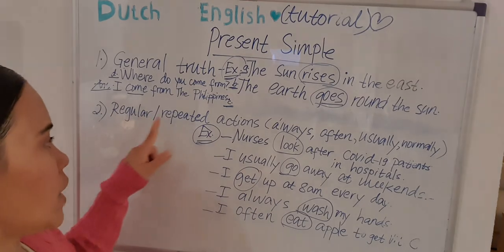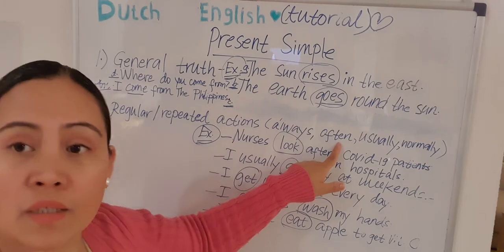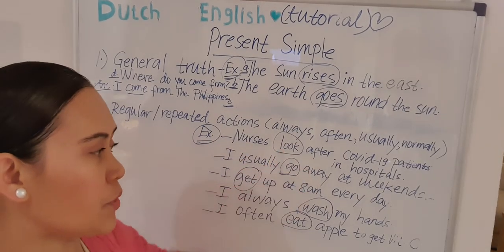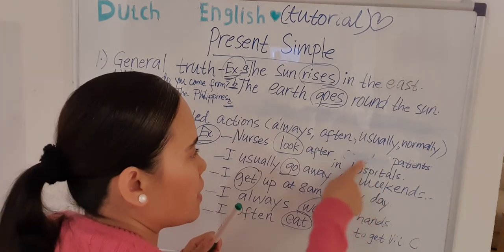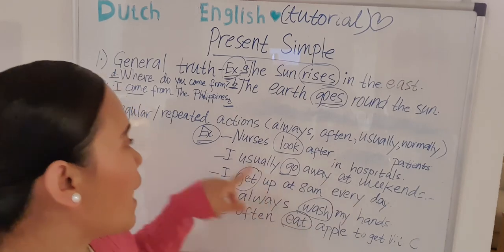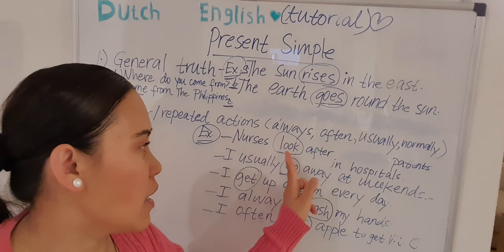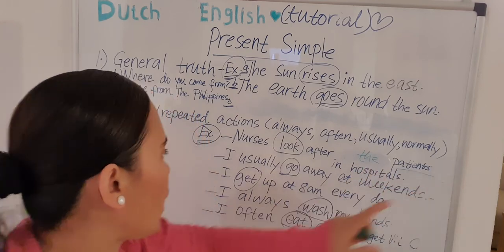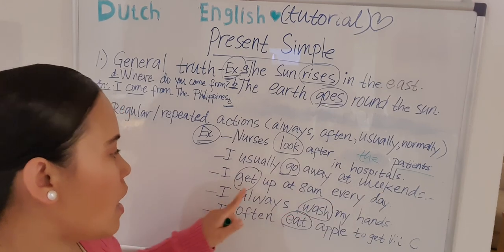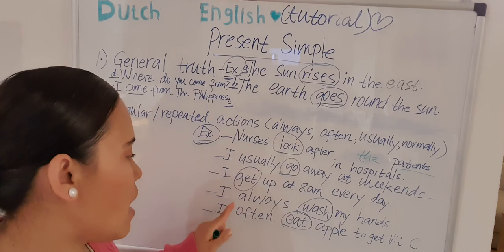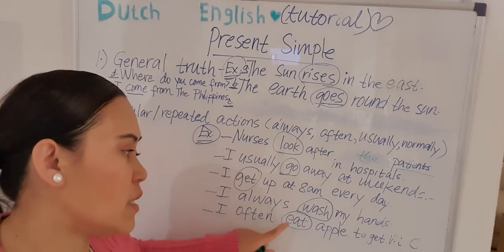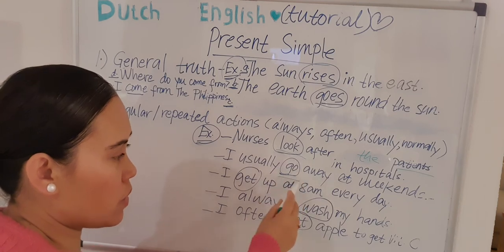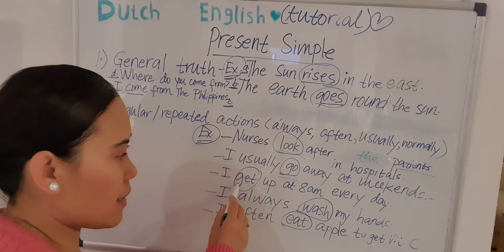The second use of present simple is regular repeated actions, used with words like always, often, usually, and normally. Examples: 'Nurses look after patients.' 'I usually go away at weekends.' 'I get up at 8 a.m. every day.' 'I always wash my hands.' 'I often eat an apple to get vitamin C.' The verbs — look, go, get, wash — are all present simple verbs.